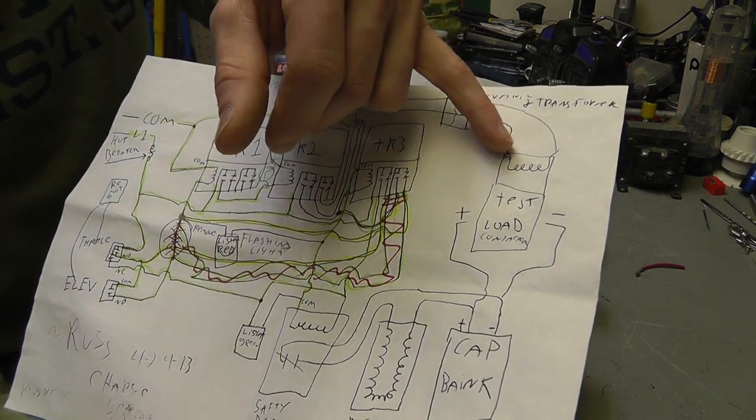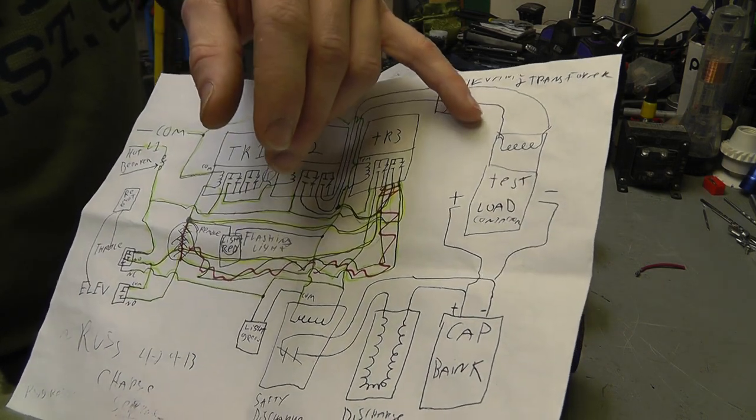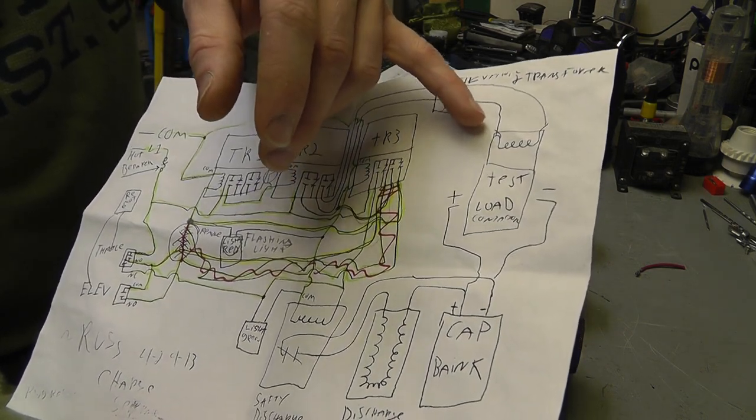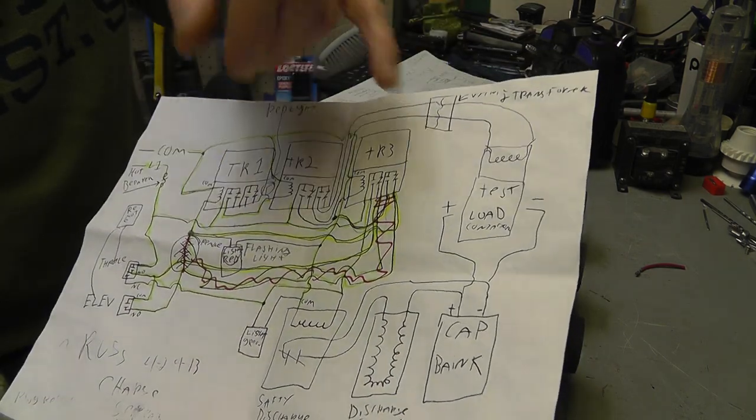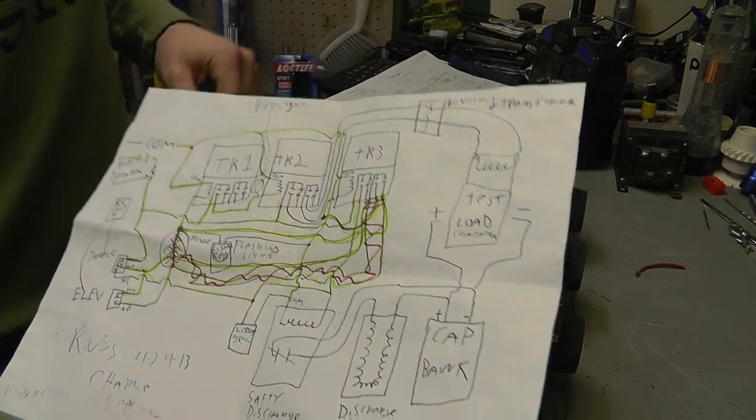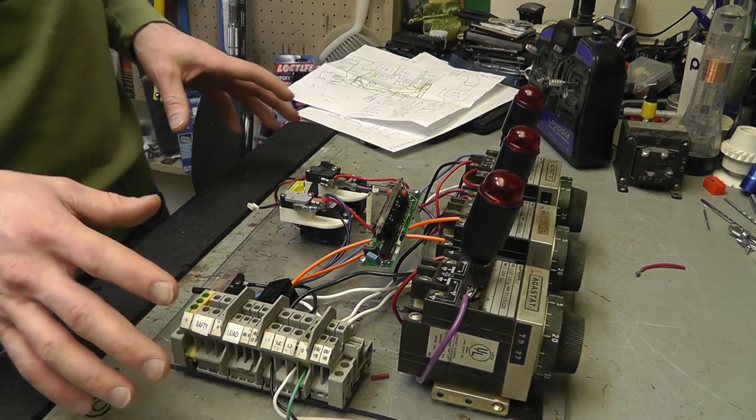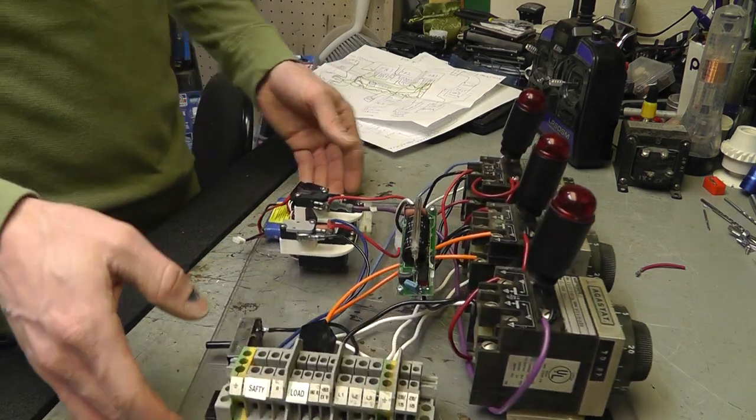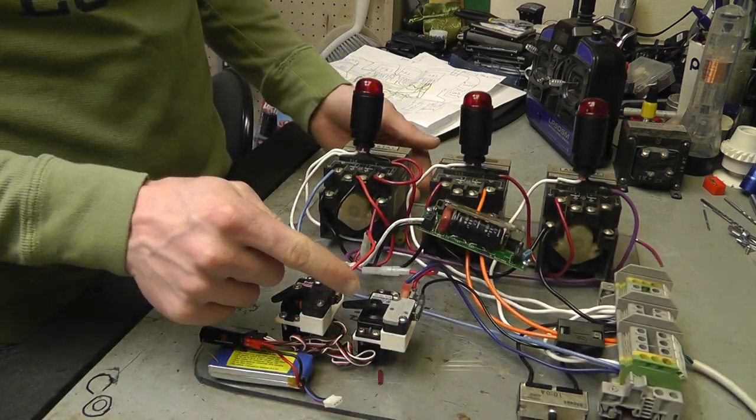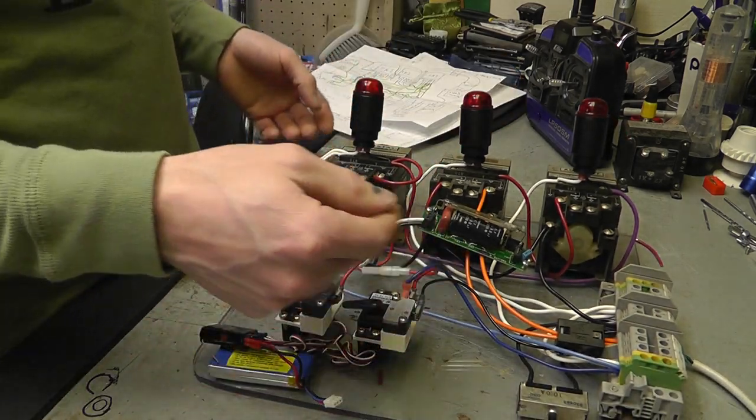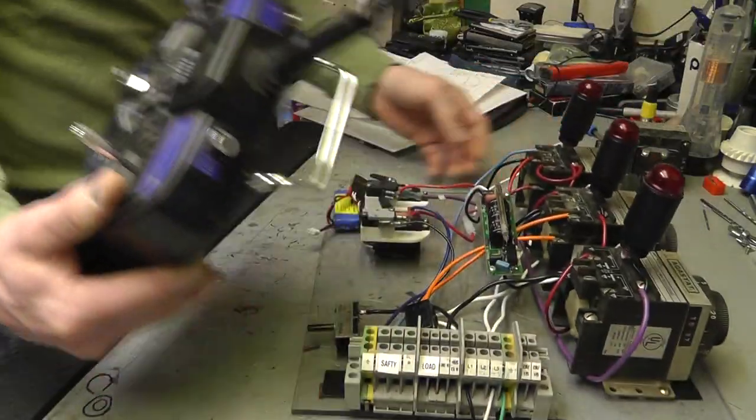On the output side there's just a contact which goes to this terminal strip right here and that actually allows me to energize whatever the load is. In the end it'll be probably a high voltage neon sign transformer triggering a trigatron of some kind to make this thing fire, similar to the pap setup. For now I'm directly testing loads.